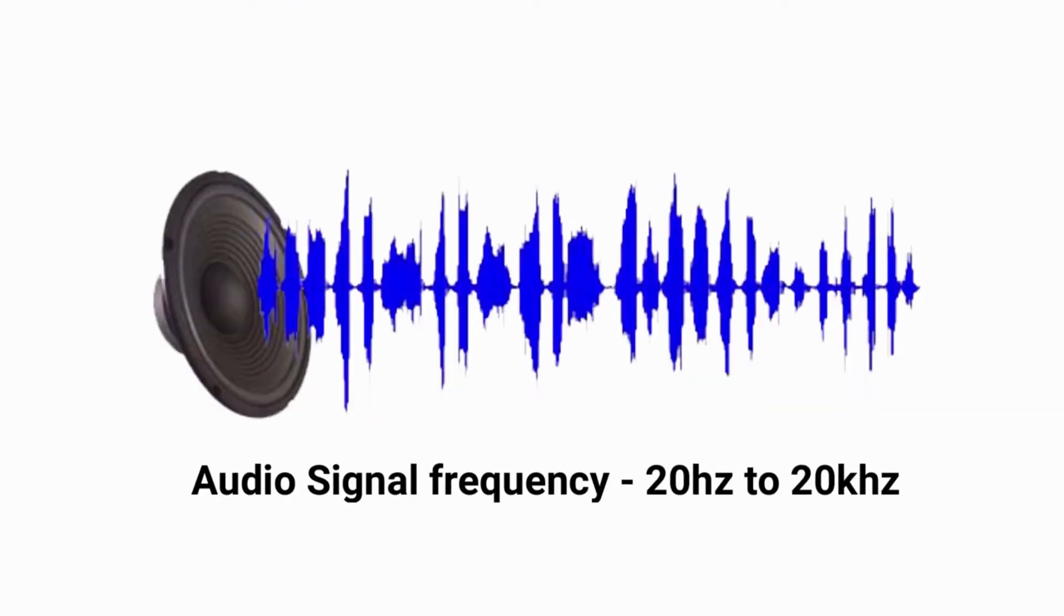In most wireless communication systems, audio signal or frequency ranging from 20Hz to 20kHz will be used as modulating signal. Now let's take a look at the three basic types of modulation.